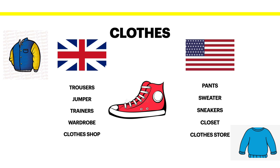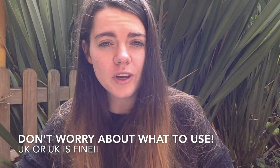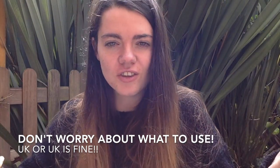Some other differences in clothes: in the UK there are trousers, in the US pants; UK jumper which is a sweater in the US; trainers in the UK, sneakers in the US. The place where you put your clothes we call a wardrobe in the UK whereas in the US it's known as a closet. In the UK we go to a clothes shop whereas in the US it's called a clothes store. Whichever one you use is okay because usually we can understand each other in any case.